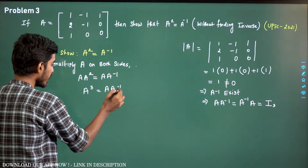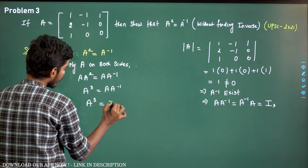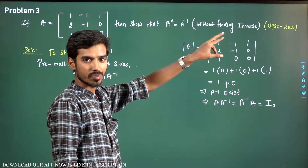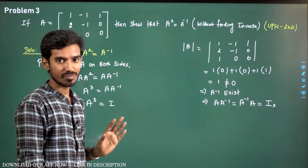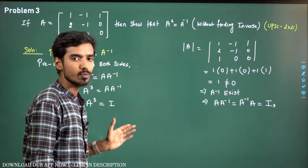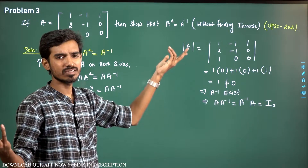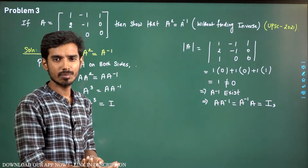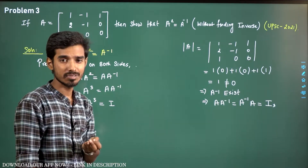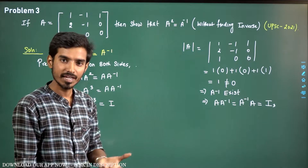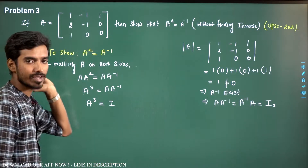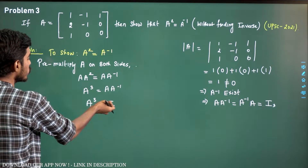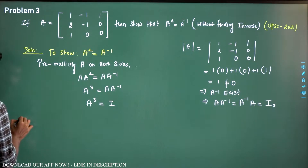Since A times A inverse equals I by definition, in order to show A squared equals A inverse, it is enough to show A cubed equals I. Without finding the inverse, we just multiply A three times and check whether we get the identity matrix. That is the same as saying A squared equals A inverse. So we need to find A cubed — first find A squared.